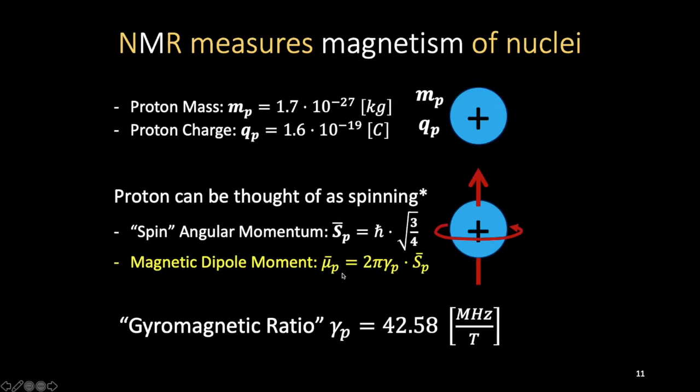Associated with the spin angular momentum is a magnetic dipole moment. The magnetic dipole moment is directly proportional to the angular momentum, and classically we can think of this as: if we have a charged surface that is spinning, this will generate a dipole moment — that's the classical analogy. What relates these two is the gamma variable, the gyromagnetic ratio of the proton, which is 42.58 MHz per tesla. It comes up all the time in MRI, so it's a good number to know.